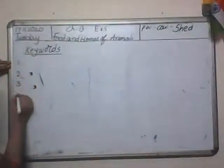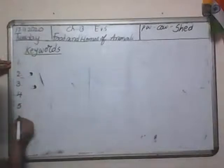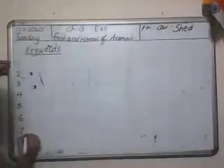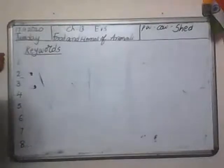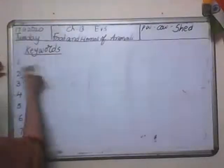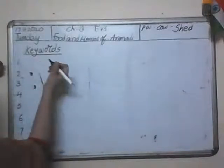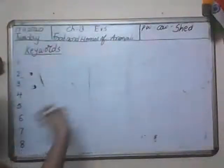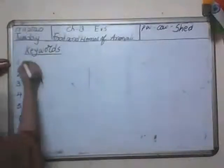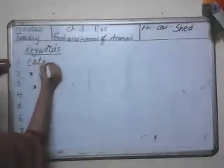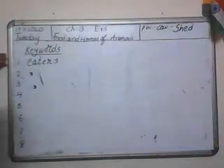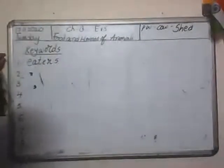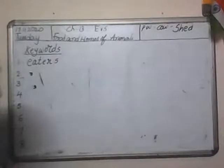There are 8 keywords. The first keyword comes from food and homes of animals. We discussed about plant eaters, insect eaters, grain eaters — so the word 'eaters': E-A-T-E-R-S, eaters.